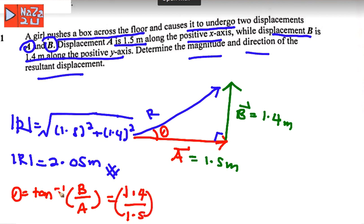We have tangent theta, inverse tangent theta. So now theta is equal to 43.02 degrees.